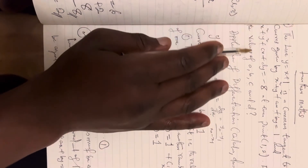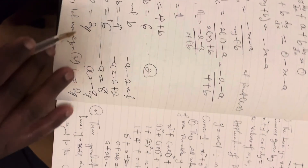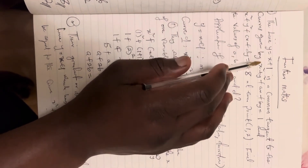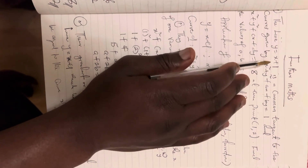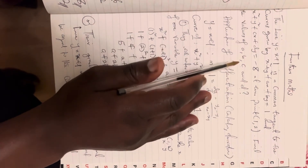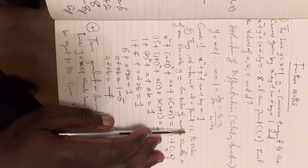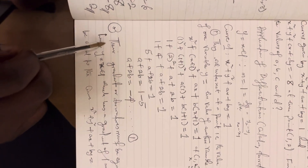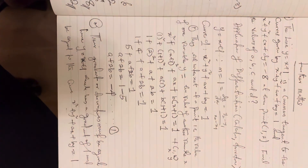We are going to use the same approach we used in finding a and b. It has been established that the condition for an equation of a line to have a common tangent with a curve: the first condition is that they will intersect at a point, and the second condition is that their gradients or derivatives must be equal.